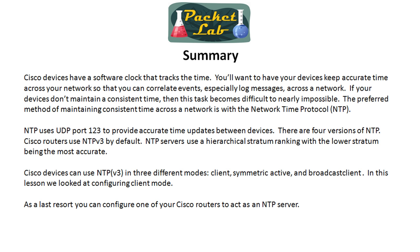You can use NTP version 3 in three different modes on Cisco devices: client mode, which we went over today; symmetric active mode, which we briefly discussed and will be shown in a separate lesson; and broadcast client mode, which we also discussed at a high level and will cover in a separate lesson as well. Client mode is the mode you'll use the vast majority of the time — it's ridiculously simple to set up. You'll want to find a public NTP server, and then make your device a client by pointing to one or more of those servers with the NTP server global configuration command.